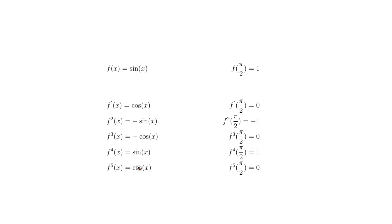The fifth derivative is cosine, and cosine(π/2) = 0. There's a clear pattern forming: sine, cosine, −sine, −cosine, and repeating. The derivative values at π/2 follow the sequence: 1, 0, −1, 0, 1, 0, then −1, 0, 1, 0, repeating on indefinitely.